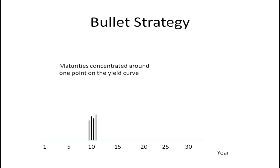The first one we can look at is your basic bullet strategy. In this case, we concentrate the maturities right around the same point on the yield curve. So here we have a bunch of bonds and they all mature right around the 10-year mark — concentrated like a bullet.